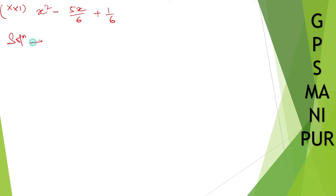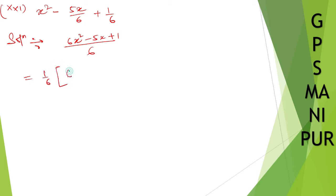Solution. If you take LCM, you have to take LCM — so take 6 as LCM — so 6x squared minus 5x plus 1. So take 1 by 6 out as common, what is left out is 6x squared minus 5x plus 1.